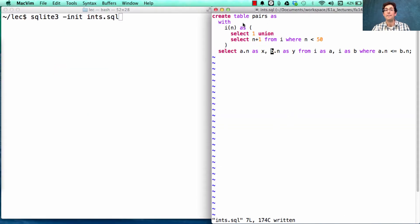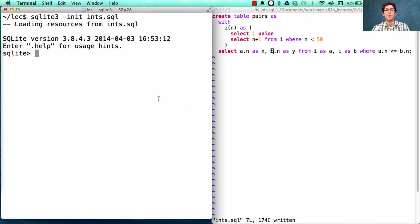So here I have the table of pairs that I just described. I've loaded it in. And then if I select what are the x and y from this table of pairs, where x times y equals 24, it will just compute all the possibilities, 1 and 24, 2 and 12, 3 and 8, 4 and 6.